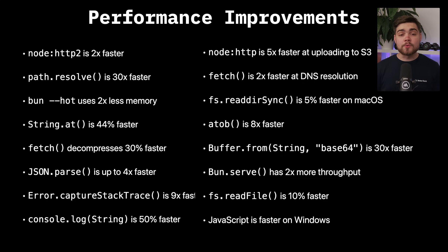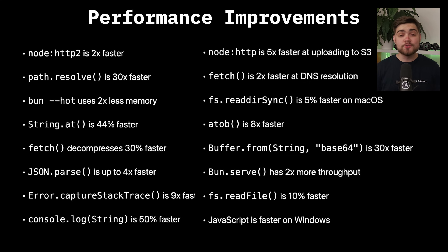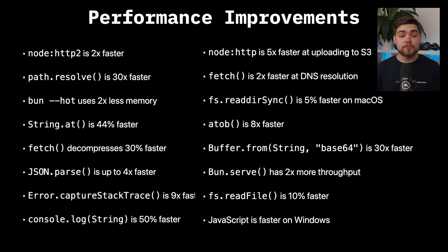Performance improvements are everywhere. HTTP2 is two times faster, Path.resolve is 30 times faster, Fetch is two times faster at DNS resolution, JSON parse is up to four times faster, and BUN.serve has two times more throughput. They've even improved JavaScript performance on Windows.